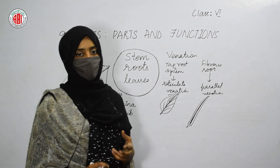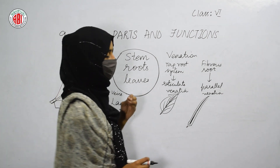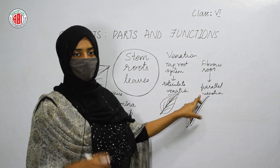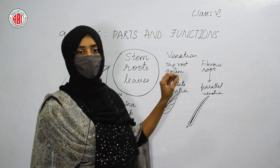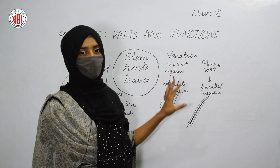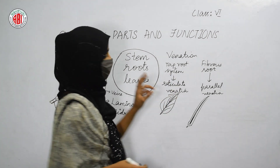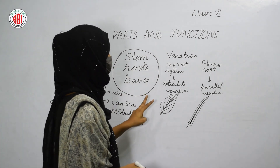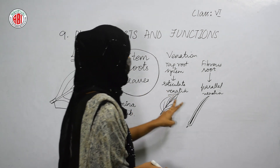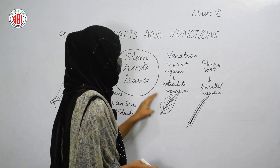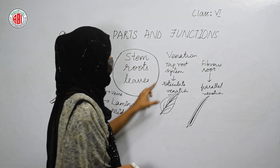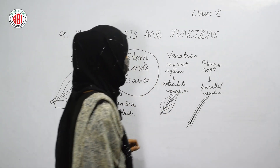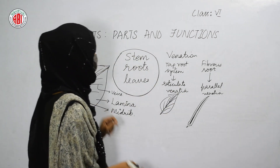Parallel venation can generally be seen in rice, wheat, and maize plants, as the veins on the leaves of these plants are arranged parallelly. So we have two kinds of leaves based on venation: one showing reticulate venation and the other showing parallel venation.